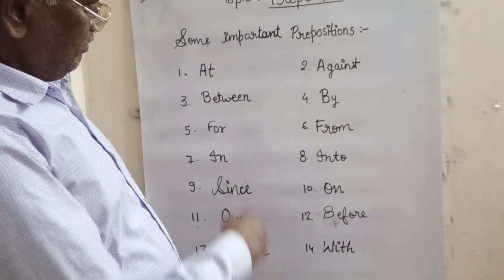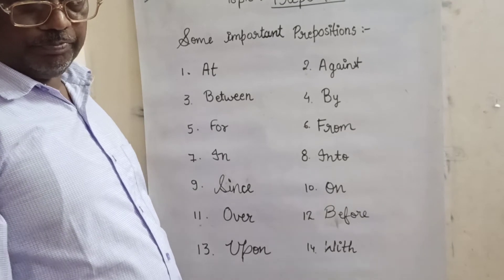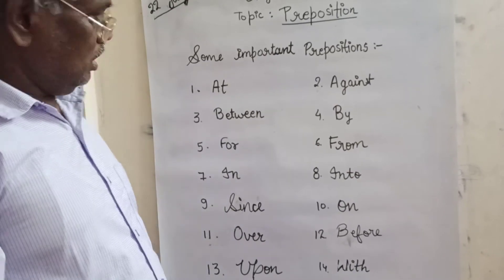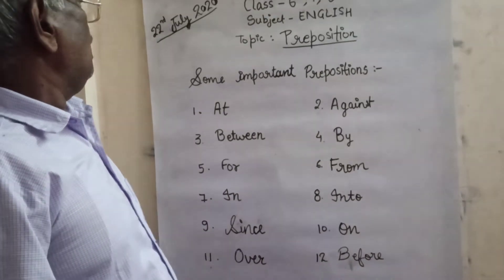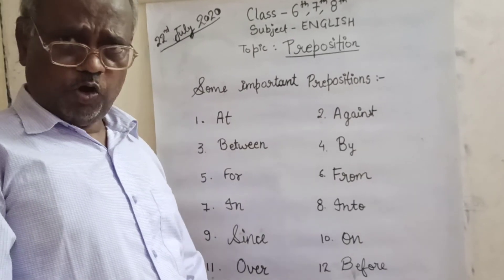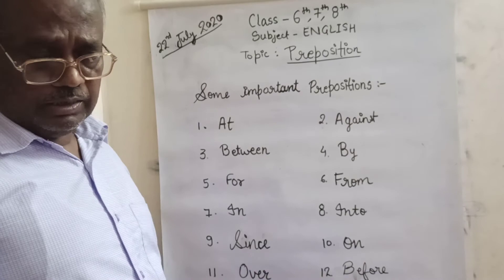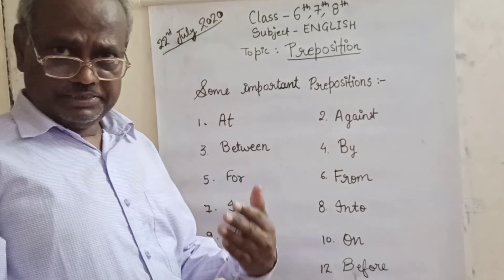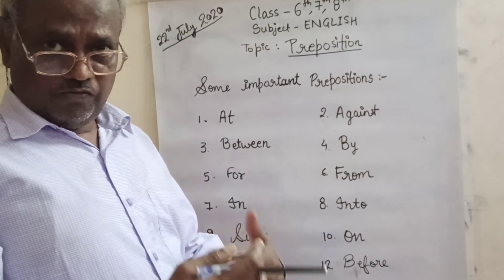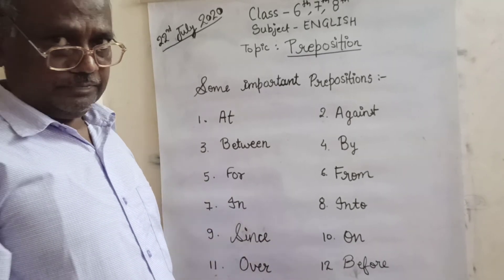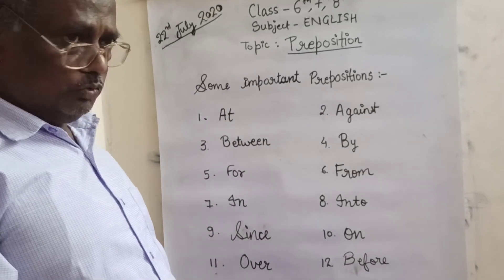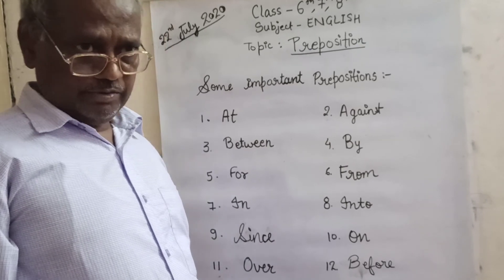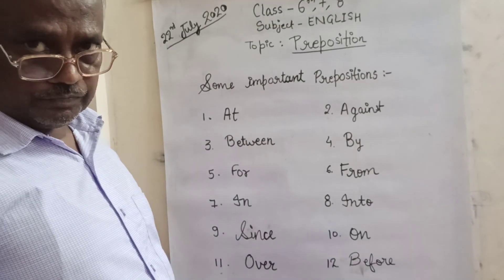Dear children, remember all these things. All these prepositions you must learn by heart. See, preposition again — 'pre' means 'before position'. A preposition is a word placed before a noun or pronoun to show its relation to some words in the sentence. For example: my house is standing in front of the tree. This book is lying in front of the window. Thank you.